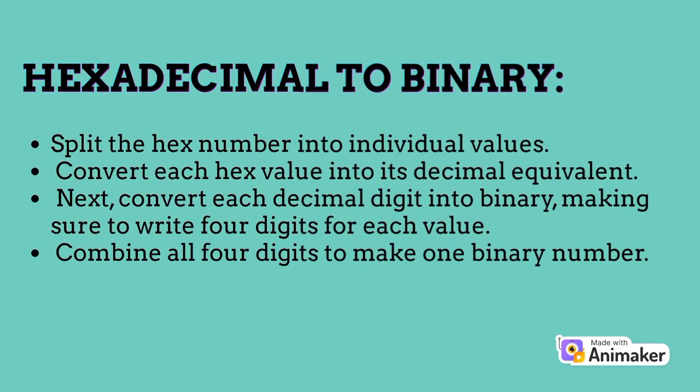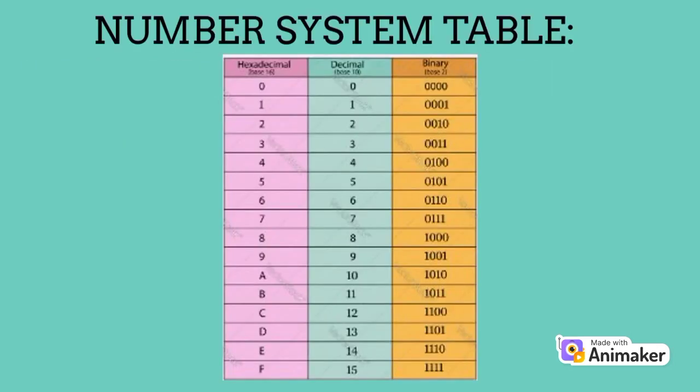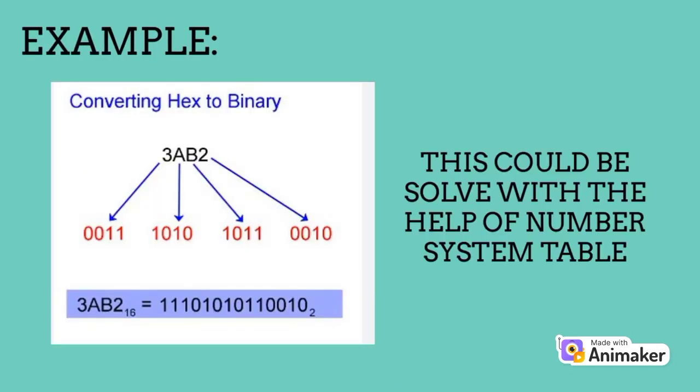Hexadecimal to binary. Split the hex number into individual values. Convert each hex value into its decimal equivalent. Next, convert each decimal digit into binary, making sure to write four digits for each value. Combine all four digits to make one binary number. Here is the number system table as presented, and an example showing the conversion of hex to binary.